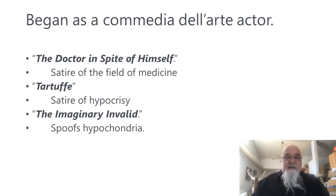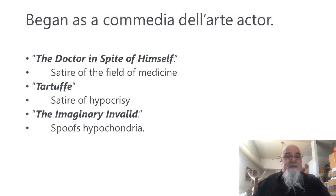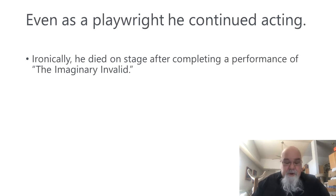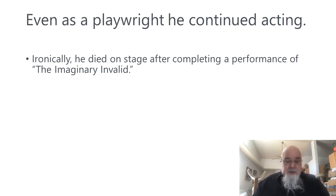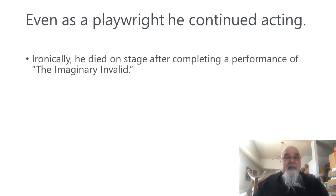A Doctor in Spite of Himself is a satire of the medical field about a guy who finds himself being considered a doctor — remember, medicine back then was very different than now. The Imaginary Invalid makes fun of hypochondria — people who are not sick but think they're sick and want attention. All three of these are comedies that make fun of certain types of people, society, and certain types of profession. They're still widely performed today. A little side note on Molière: even though he's well known as a playwright, he started as and stuck to acting. The irony is he actually died on stage — after doing a performance of The Imaginary Invalid, he collapsed and ended up dying. What a way for an actor to go.